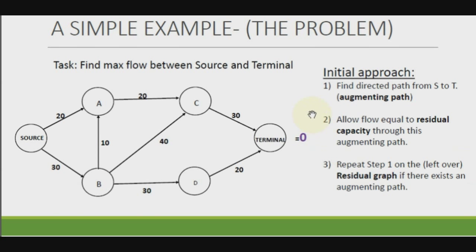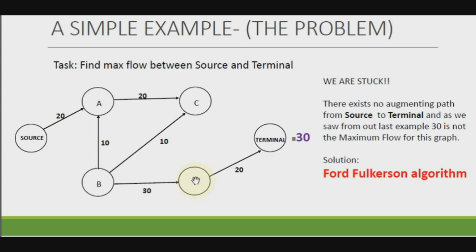Step 1: find a direct path from S to D. The path I chose has a residual capacity of 30, the maximum flow we can push through. Step 3: repeat. For the leftover residual graph, we are stuck — there are no directed paths from S to D. As we saw in the last example, 30 is definitely not the maximum flow for this graph. This is where the Ford-Fulkerson algorithm comes in.